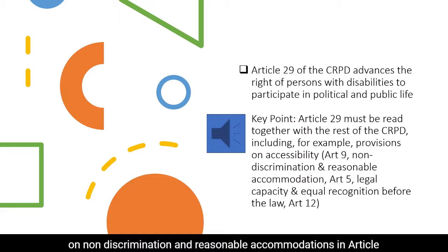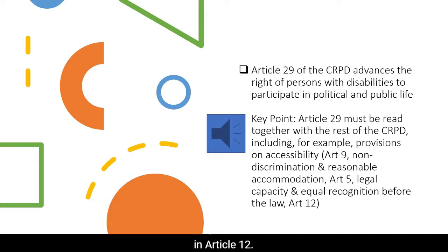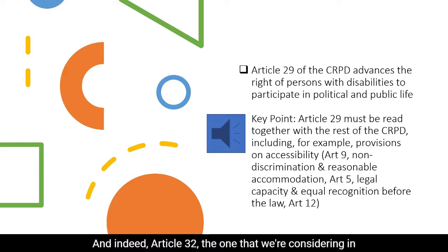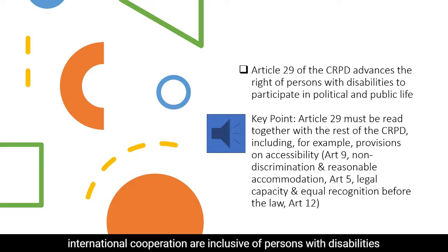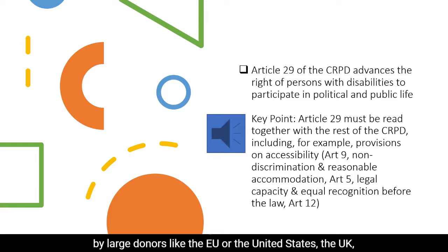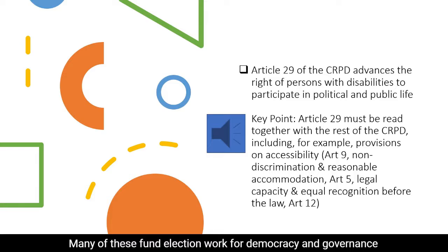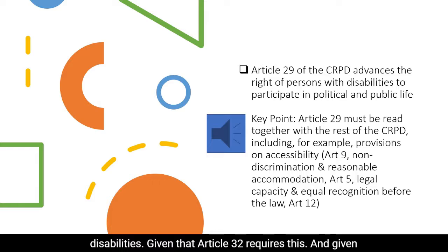For example, provisions on accessibility, on non-discrimination and reasonable accommodation in Article 5, legal capacity and equal recognition before the law in Article 12, and indeed Article 32 — the one we're considering in this module. Article 32 mandates that programs supported by international cooperation are inclusive of persons with disabilities. Many international cooperation programs funded by large donors like the EU, the United States, the UK, Australia, or the UN fund election work or democracy and governance programs. All of these ought to be inclusive of persons with disabilities, given that Article 32 requires this and that most countries around the world have ratified the CRPD.